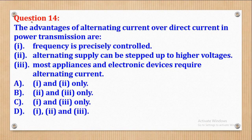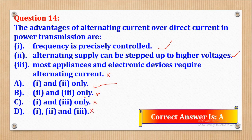Question 14: the advantages of alternating current over direct current in power transmission. Roman 1 — frequency is precisely controlled: correct. Roman 2 — alternating supply can be stepped up to higher voltages: correct. Roman 3 — most appliances and electronic devices require alternating current: not correct. Looking at the options, part A gives roman 1 and roman 2 only, which matches our correct statements. Therefore the correct answer is part A.